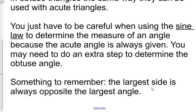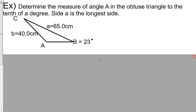Here's an example: determine the measure of angle A in the obtuse triangle to the tenth of a degree. Side a is the longest side. Here's my triangle: angle B is 23 degrees, side b is 40 centimeters, and side a is 65 centimeters.